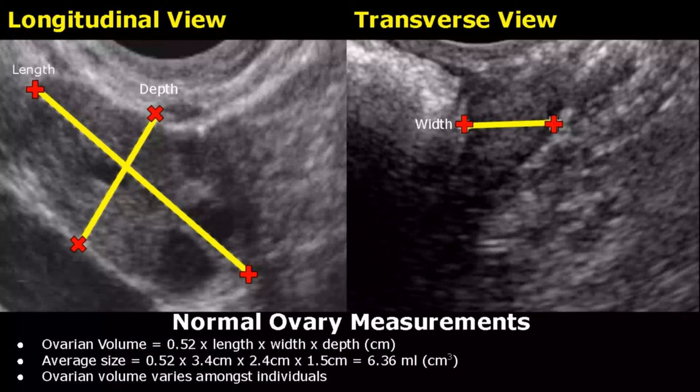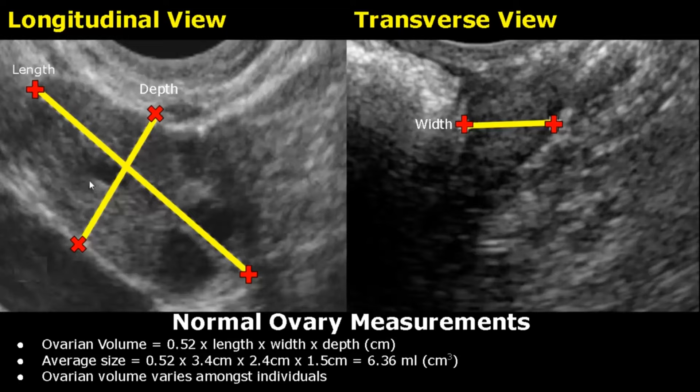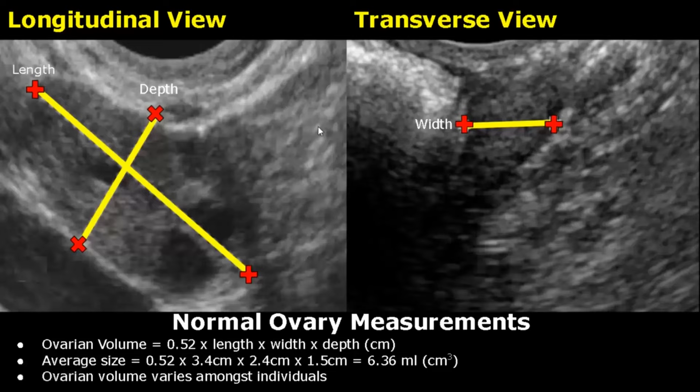Hello everyone, this is Dr. Sam and in this video we will learn how to measure ovarian volume. The formula for measuring ovarian volume is: 0.52 × length × width × depth, all values in centimeters. These are transvaginal images — the measurements are more accurate in this approach.